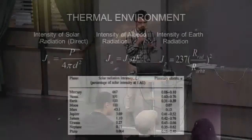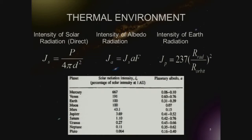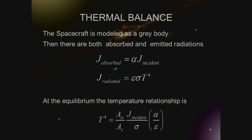The intensity of solar radiation is shown here. This is the distance from the sun, this is the albedo factor — which is a function of the thermal inertia of the planet — and this is the intensity of radiation from the Earth.